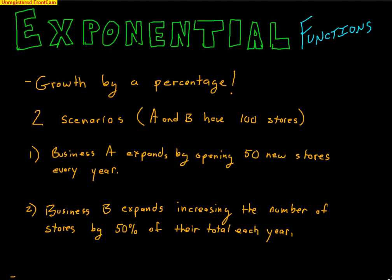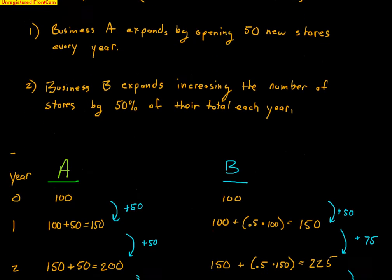We have two businesses. They both have 100 stores at the beginning. Business A expands by opening 50 new stores every single year. Business B expands by increasing the number of stores by 50% of their total each year. So A is going up by 50 new stores every year, and B is going up by 50% of their total stores each year.